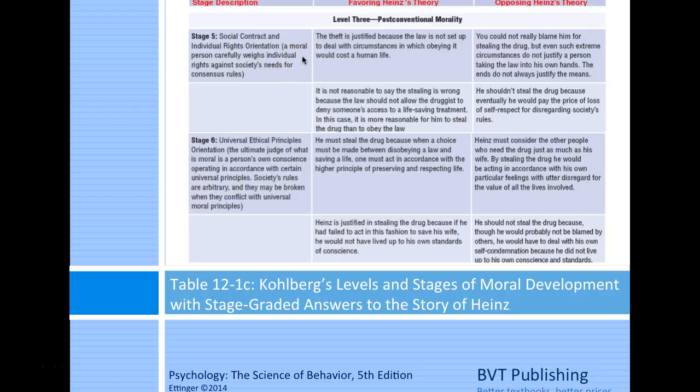Opposing stage five: you could not really blame him for stealing, but even such extreme circumstances do not justify a person taking the law into their own hands—the ends do not always justify the means. He shouldn't steal because he would eventually pay the price of losing self-respect for disregarding society's rules.